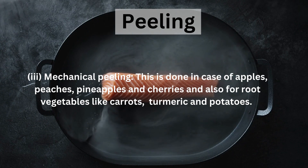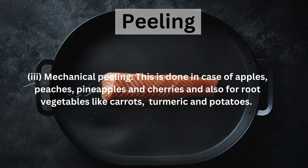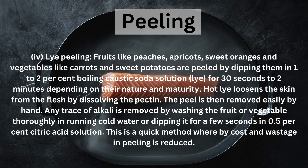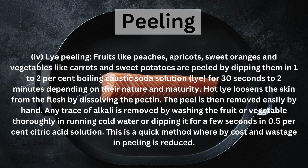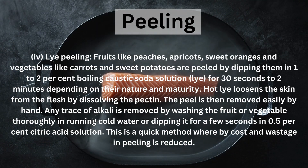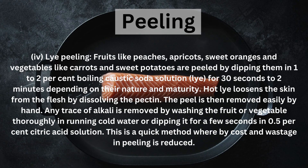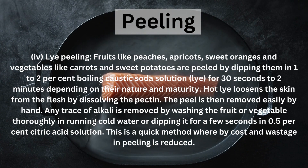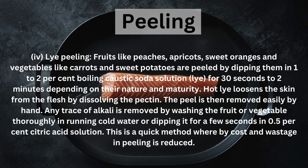Mechanical peeling is done in the case of apple, peaches, pineapple and cherries, and also for root vegetables like carrot, turmeric and potatoes. Lye peeling is used for peaches, sweet oranges, carrots and sweet potatoes, by dipping them in 1-2% boiling caustic soda solution for 30 seconds to 2 minutes depending on their nature and maturity. Lye loosens the skin from flesh by dissolving the pectin. Any trace of alkali is removed by washing thoroughly in running water or dipping for 2 seconds in 0.5% citric acid solution.